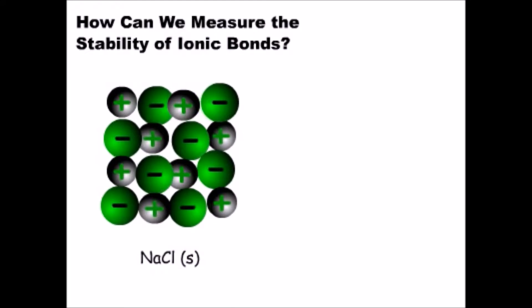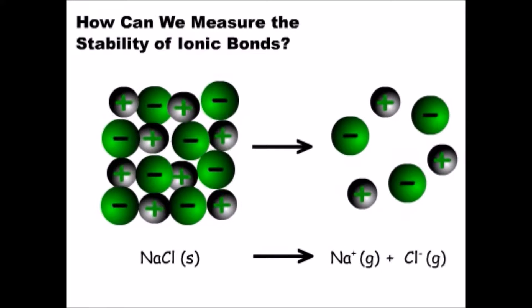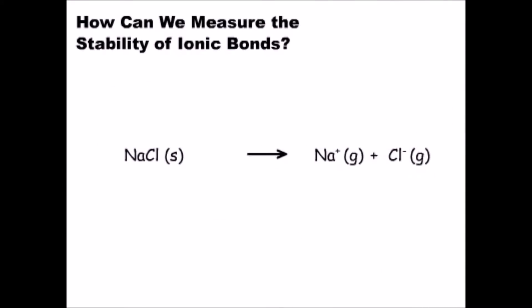Solid sodium chloride dissociates to form sodium ions and chloride ions. Energy must be added to break the ionic bonds in sodium chloride.